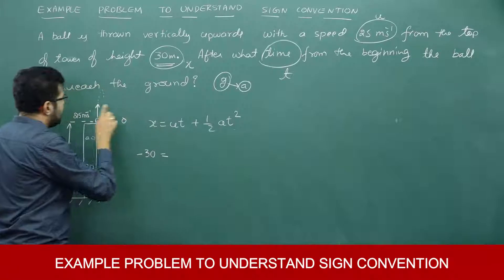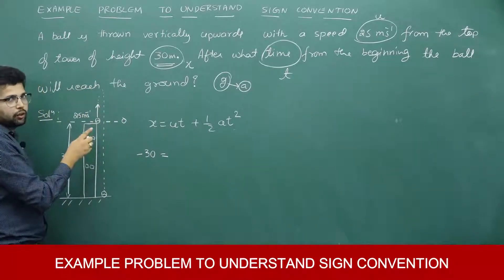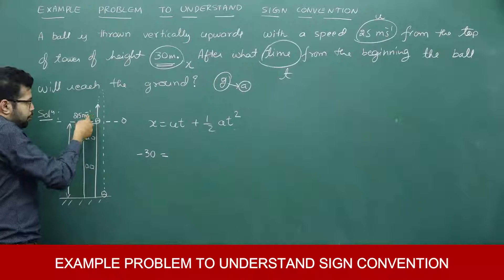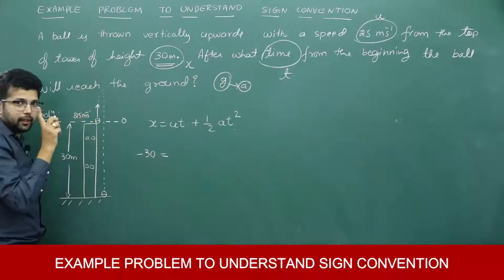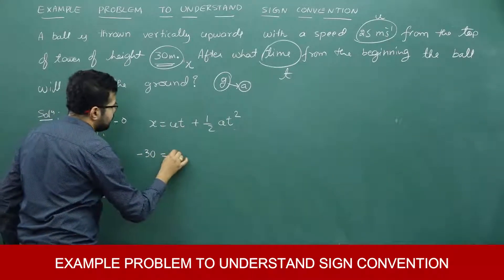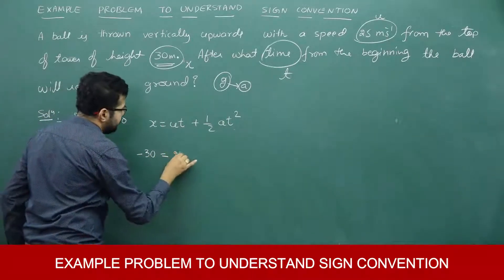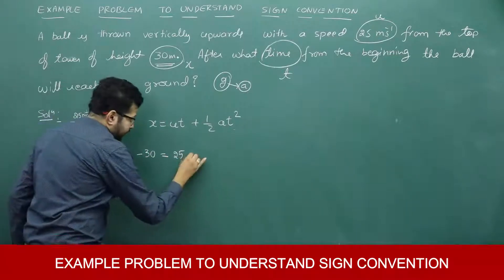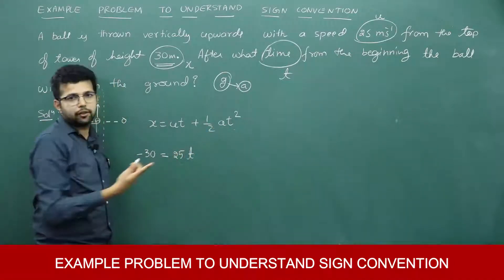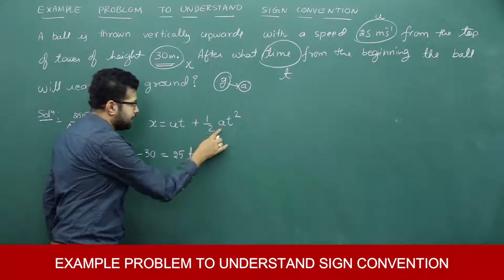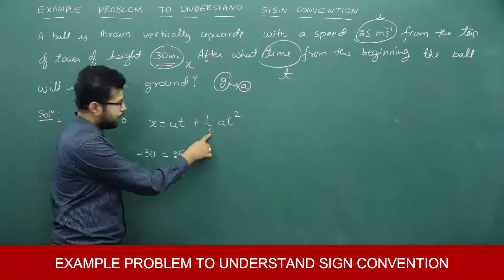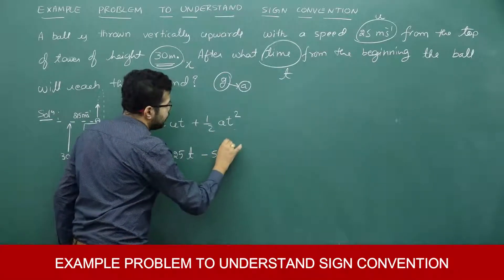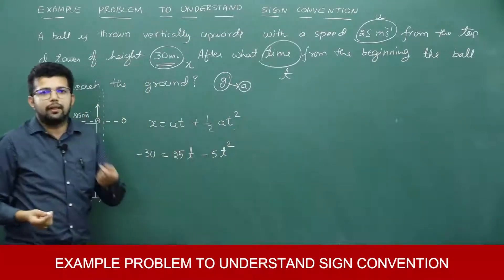Initially the ball was projected upward, so the initial velocity is going up. Since upward velocities are taken as positive, u = +25. Substituting into the equation: −30 = 25t + ½(−10)t². Acceleration due to gravity is −10, so −10/2 = −5, giving −30 = 25t − 5t². This gives us a quadratic equation.